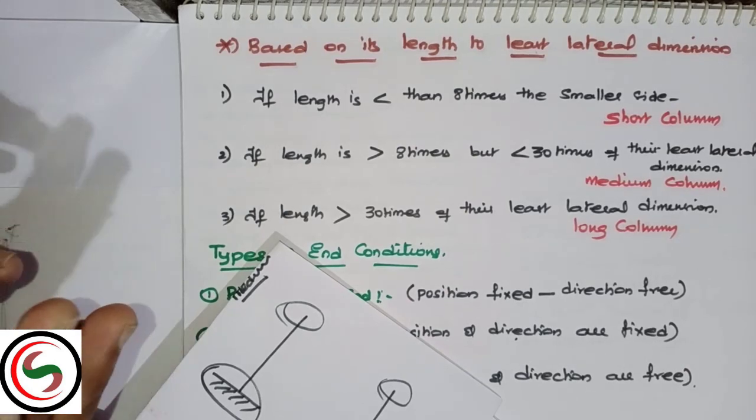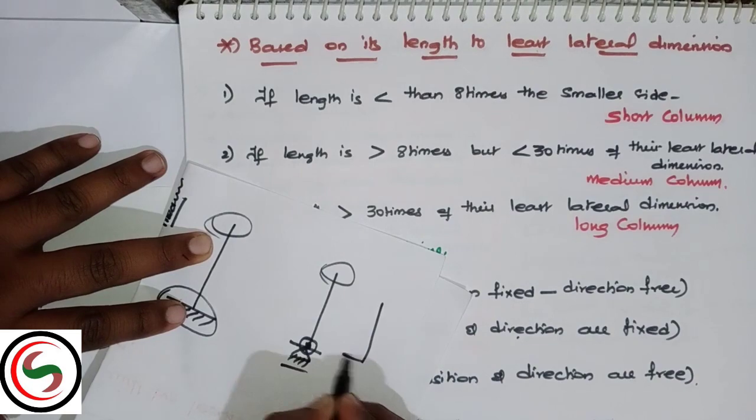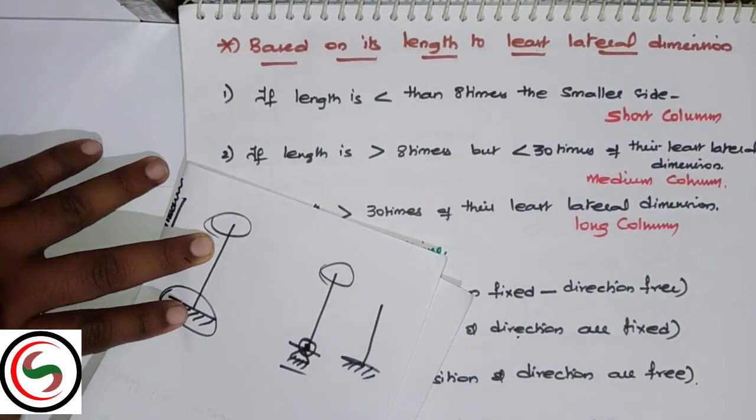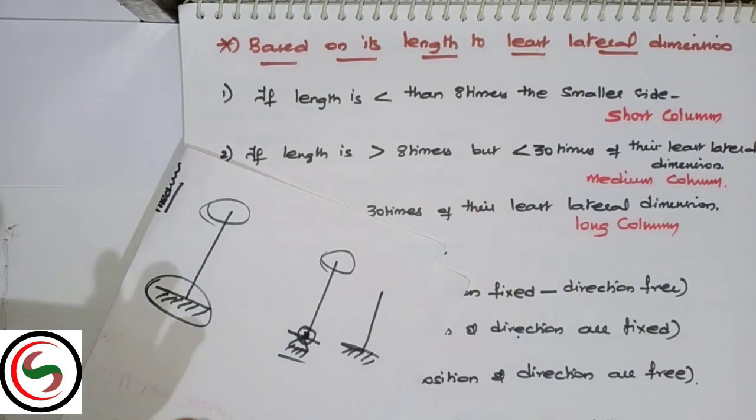Suppose in a building, if columns are at ground floor only, that column is one end fixed, other end free condition. In a frame, if a beam has columns, it's one end fixed, other end free condition.